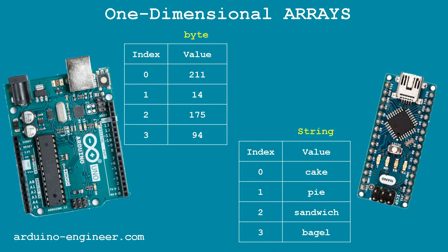For a one-dimensional array, that is an array with one index, it will look like this. In the first table is the representation of an array of elements of the byte type, and in the second an array of the string type. The first column contains the indexes of the array elements and the second column contains the values of the elements. Indexes in Arduino are integers only and always start from zero. The number of indexes, or elements, of a particular array is set in the program once during its declaration.